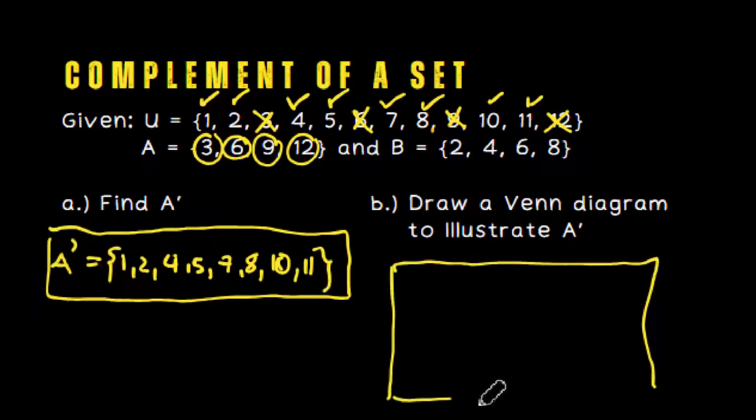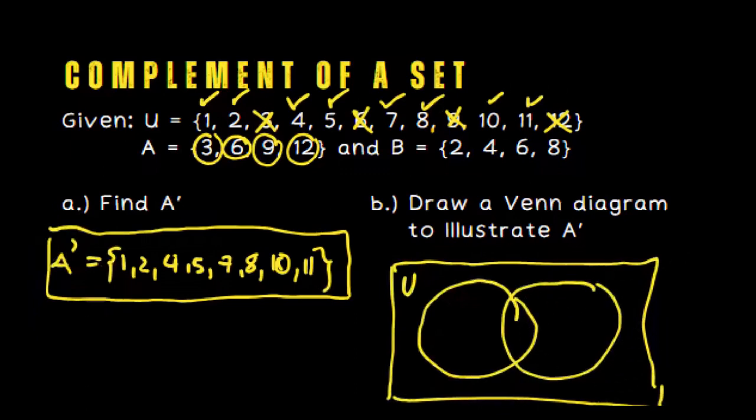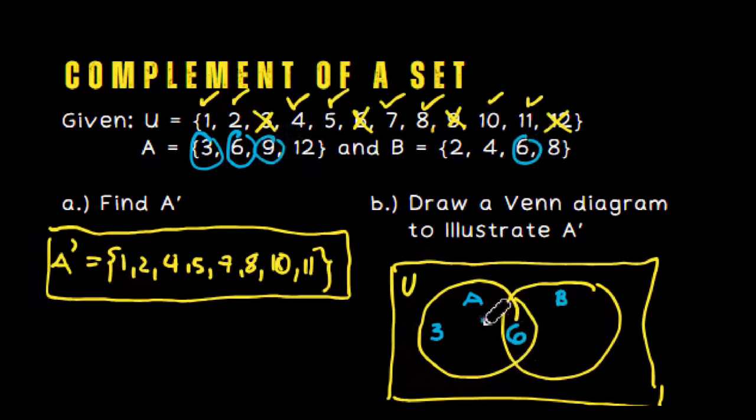First, I will draw a universal set with two overlapping circles. Why overlapping? Because they have common elements. Let's list the elements of set A: 3, 6 in the middle because B also has 6, 9, and 12. Set B has 2, 4, and 8.